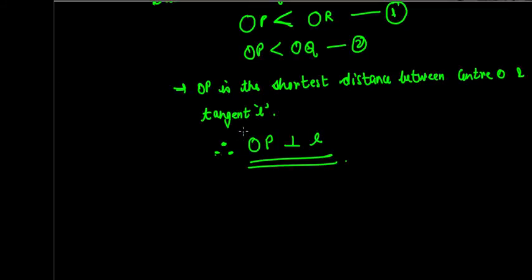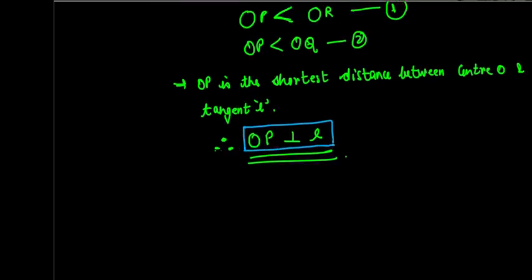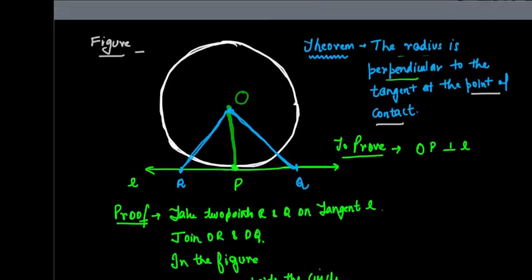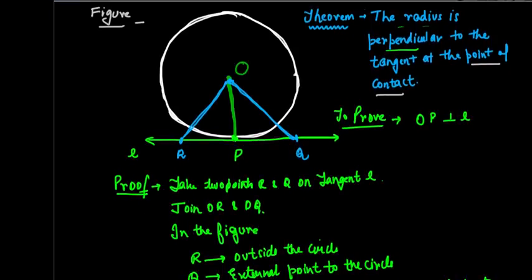Hence proved. The reason is that the shortest distance between a point and a line is always a perpendicular to the line from that point. That is how we prove that the radius is always perpendicular to the tangent at the point of contact. This angle will be 90 degrees, and this angle will also be 90 degrees.